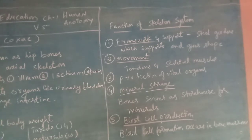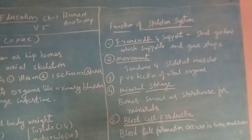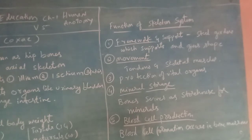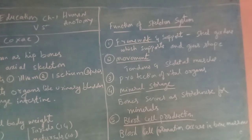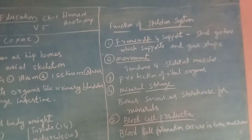Now let us see the functions of the skeletal system. First is support — it acts as a framework. Without bones, the body will not have a shape or strength. It is like a steel girder for our body, which supports the body and gives it a particular shape.